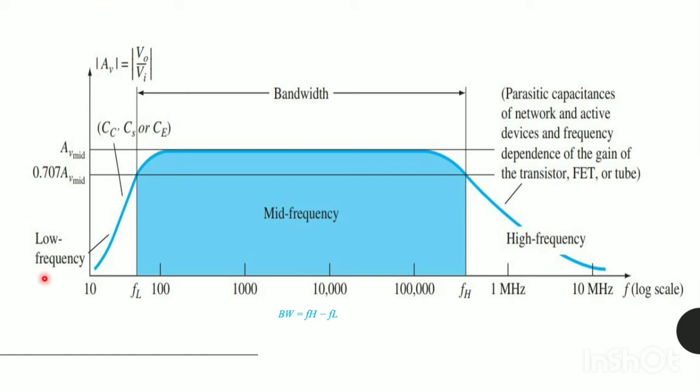Here is the frequency response diagram. This region denotes our low frequency and it is due to the coupling capacitors and the bypass capacitors, namely CC, CS or CE. This region is high frequency and this is due to the parasitic capacitance. This region is the mid-frequency region. This line is our mid-frequency gain, that is AV mid, and 3 dB less than is our cut-off frequency, that is 0.707 of AV mid. From here, our low frequency FL and high frequency FH are calculated, and our bandwidth is FH minus FL.